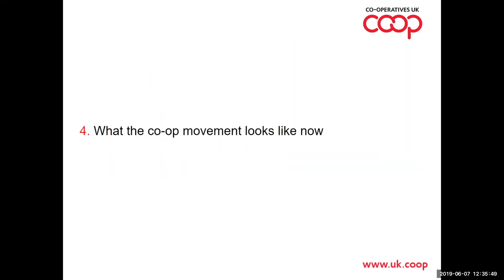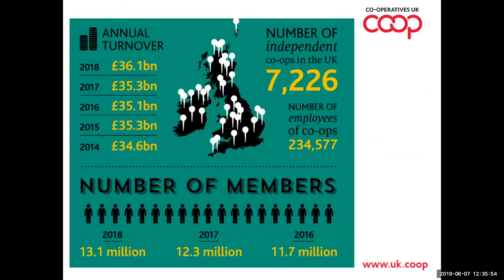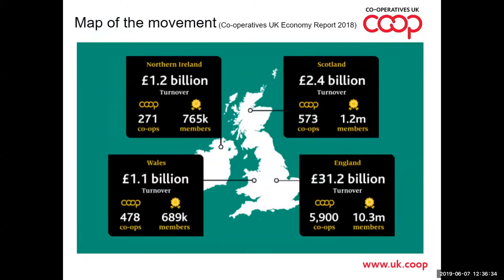Moving to what the co-op movement looks like now in the UK: there are just over 7,000 independent co-ops in the UK with 13 million members. Using the football analogy — although we may have written the rules of football, we are certainly not the best players. Similarly, although we wrote the rules of what a cooperative is and can be called the birthplace of the movement, other countries are way better than we are. There are co-ops all over the UK, from the Isle of Skye right down to the Channel Islands.